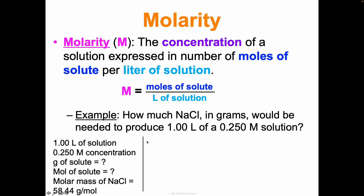Now we have background information so we can get started. Diagnose: molarity equals moles over liters. I want to solve for moles though, so let's rearrange before plugging in. Moles is currently being divided by liters of solution. To get it by itself, I need to multiply both sides by liters - that makes the liters cancel out. I'm left with: moles = M × L, molarity times liters.